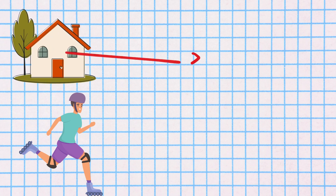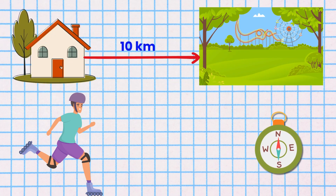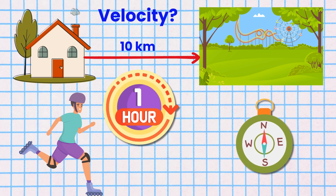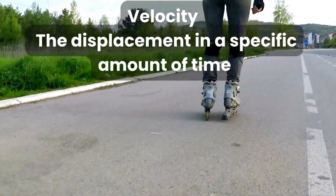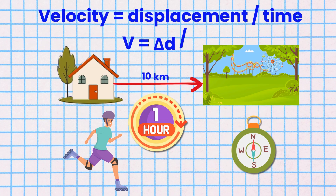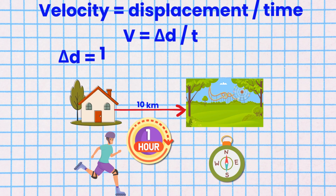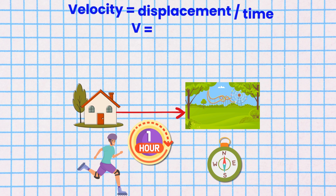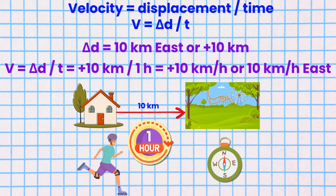Velocity. Isaac is rollerblading eastward from his home to a park 10 kilometers away and it takes him one hour to get there. So what is Isaac's velocity? Velocity is defined as a displacement in a specific amount of time, or the rate of change of displacement. So velocity v equals displacement delta d divided by time t. So it is plus 10 kilometers divided by 1 hour, which equals plus 10 kilometers per hour, or 10 kilometers per hour in the eastward direction.